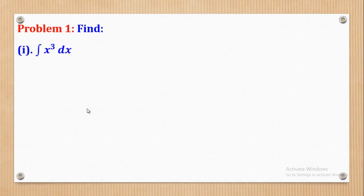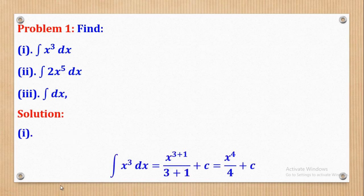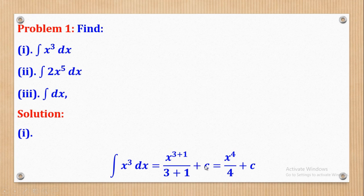We shall begin with problem 1. Roman 1: find the integral of x cubed with respect to x. Since n is 3, to integrate we increase the power by 1 to get x to power 3 plus 1, then divide by the new power which is 3 plus 1. Remember to add the constant of integration. Simplifying gives x to power 4 divided by 4 plus C.